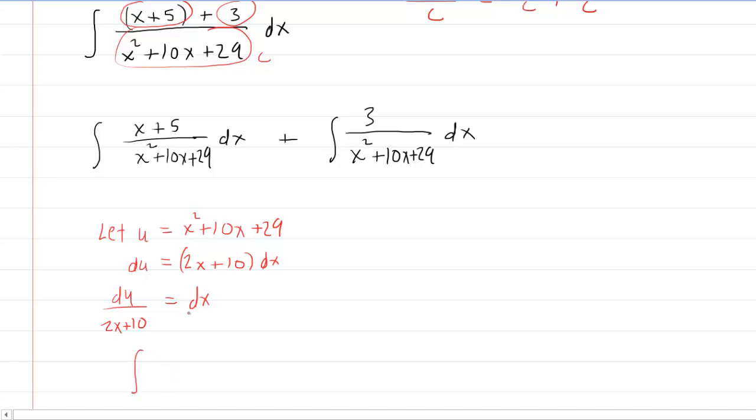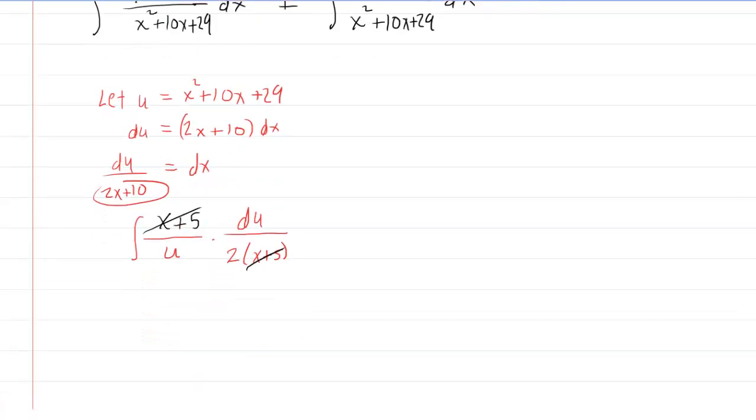Then I would have an integral of x plus 5 all over my new denominator, which will be u times my new dx, which is du over, now the 2x plus 10 can be rewritten as 2 times x plus 5. This was the reason why we decided to keep an x plus 5 in the numerator, because these will cancel out. So a bit of foresight was required on our parts.